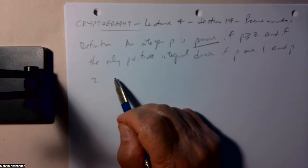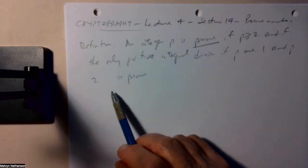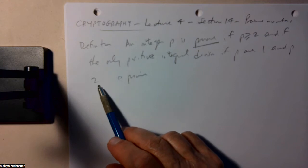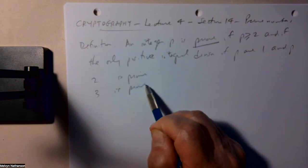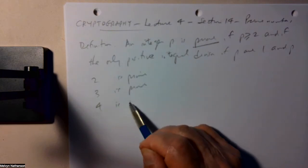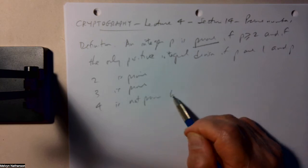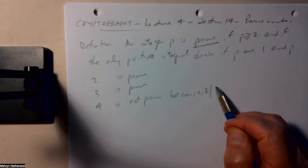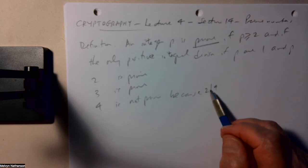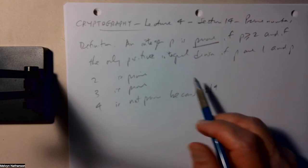So, 2 is prime. The only positive integers that divide 2 are 1 and 2. 3 is prime. 4 is not prime because 2 divides 4. This vertical line is our symbol for dividing.